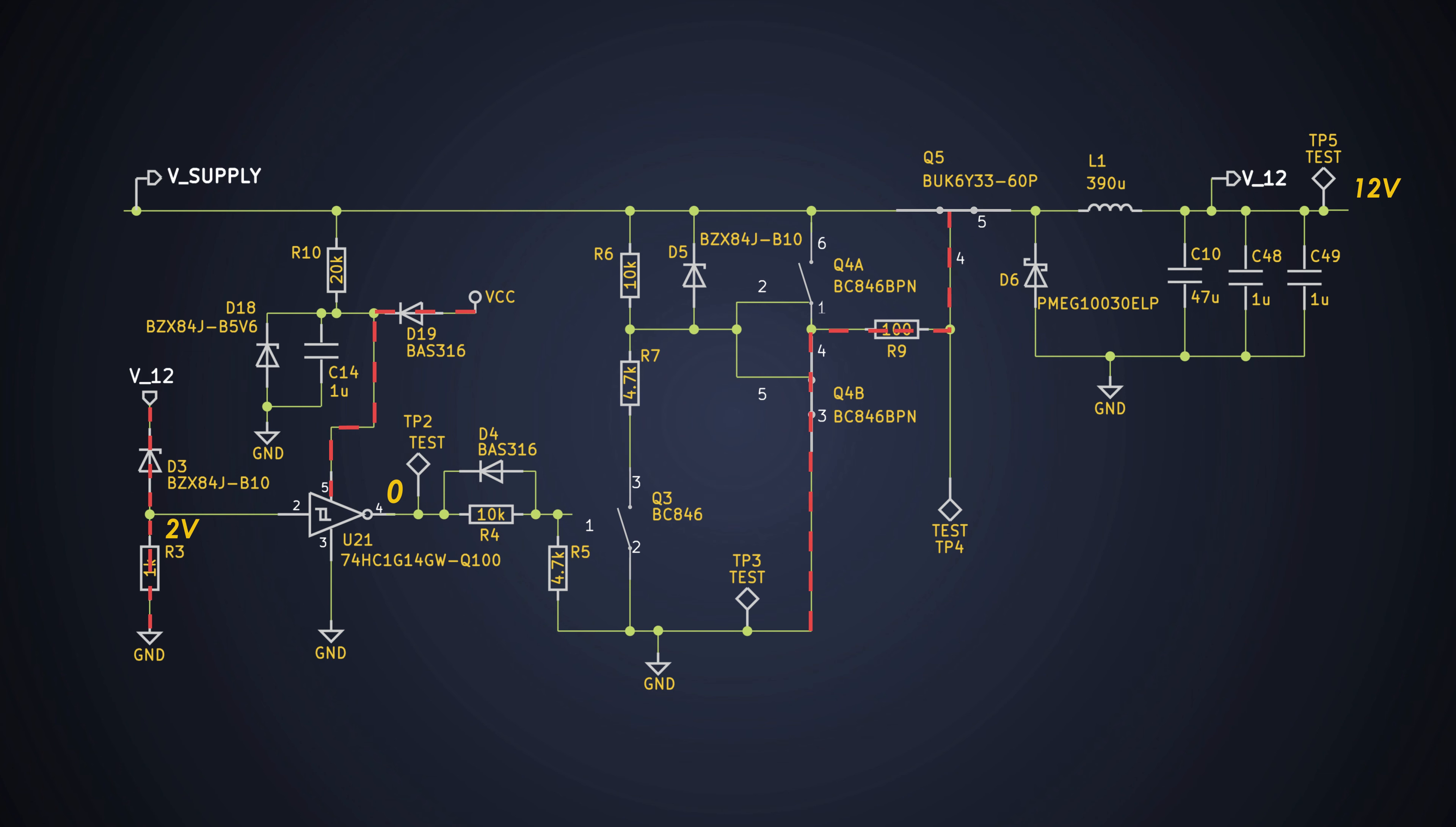Q3 turns off, hence input of the totem pole would be 1. And Q4A turns on, which pulls the MOSFET Q5 to high and it turns off. When the MOSFET turns off, the diode D6 turns on and the inductor starts discharging, providing necessary output voltage.